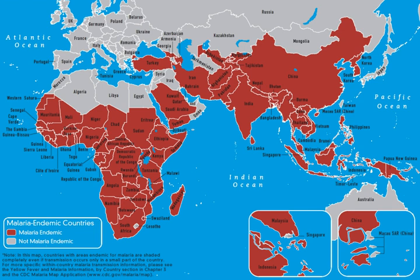Race and health refers to how being identified with a specific race influences health. Race is a complex concept that changes across time and space and depends on both self-identification and social recognition. In the study of race and health, scientists organize people into racial categories depending on different factors such as phenotype, ancestry, social identity, genetic makeup, and lived experience.